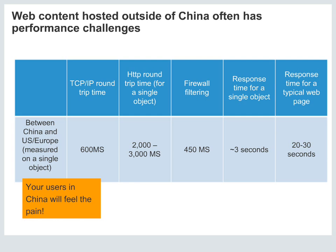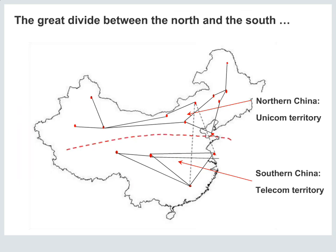For web content hosted outside of China, performance challenges are even bigger. The response time for a typical web page hosted from the U.S. or the EU takes anywhere from 20 to 30 seconds. Another reason for the extreme discrepancy in load time is the great divide between the north and the south — in northern China you have the Unicom territory, in southern China the Telecom territory. This creates a fragmented market, forcing online businesses to mirror their sites from ISPs in both locations.